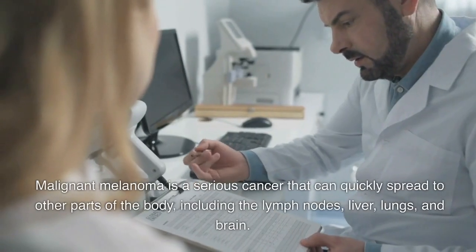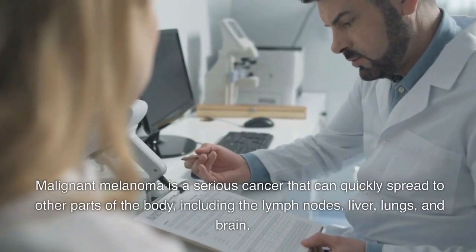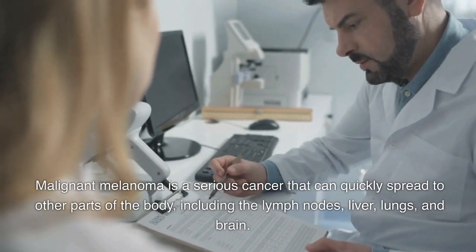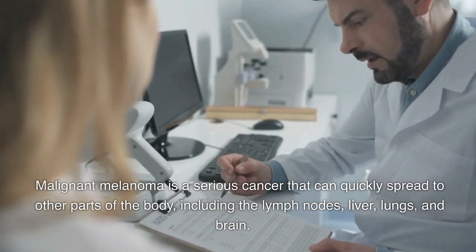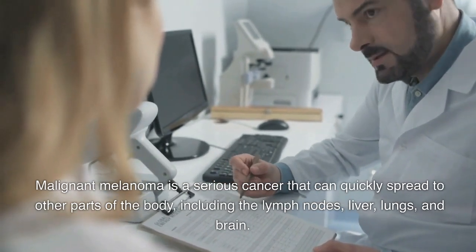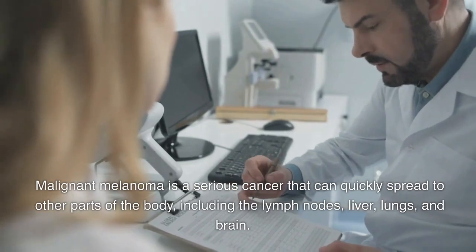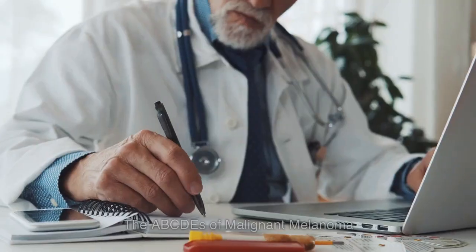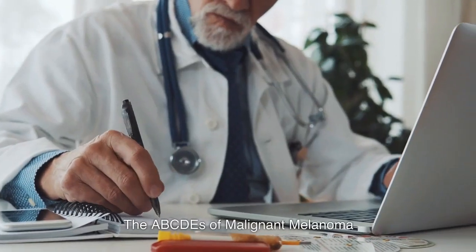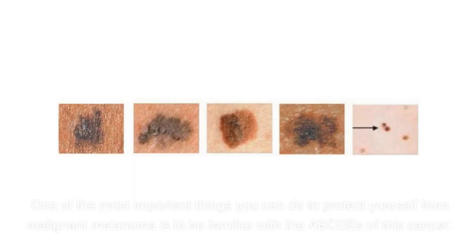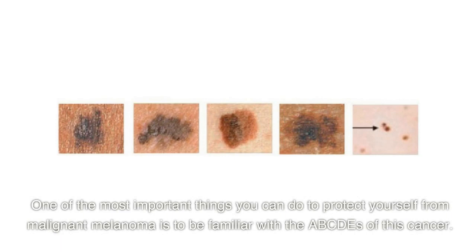Malignant melanoma is a serious cancer that can quickly spread to other parts of the body, including the lymph nodes, liver, lungs, and brain. One of the most important things you can do to protect yourself from malignant melanoma is to be familiar with the ABCDEs of this cancer.